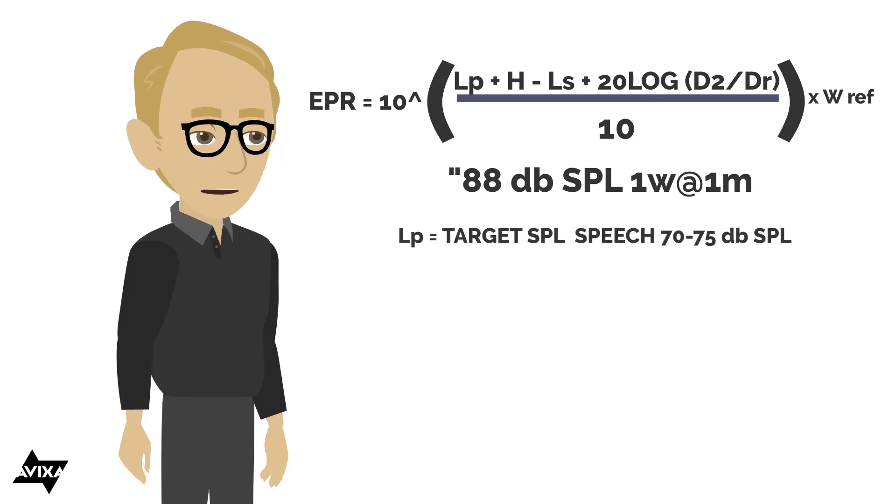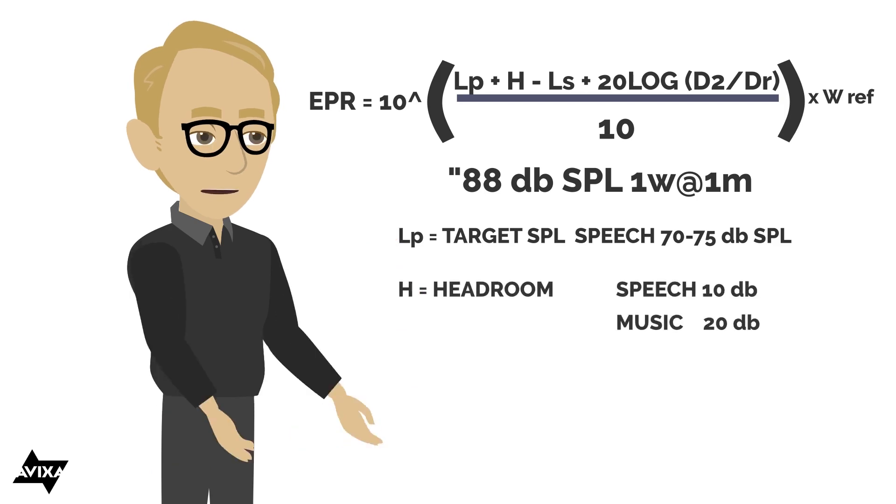Let's look at some of the other things that we would put in. Lp, that is the target sound pressure level. Now if it's a speech only system, that's probably somewhere in the neighborhood of about 70 to 75 dB SPL. If it's a music system, then that's going to be completely application dependent. Headroom: this is the amount of decibels I need above the typical target level so that all of my signal peaks will pass undistorted.